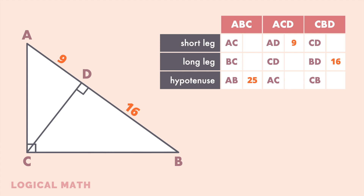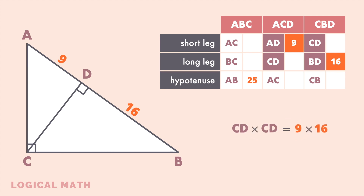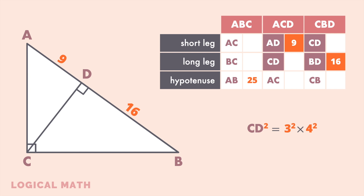The side lengths of two similar triangles are proportional. Since triangle ACD is similar to triangle CBD, the following equation holds. After substituting known values and using cross multiplication, we get CD squared on the left and 9 times 16 on the right side — that is, 3 squared times 4 squared. So the length of the height CD is 12.